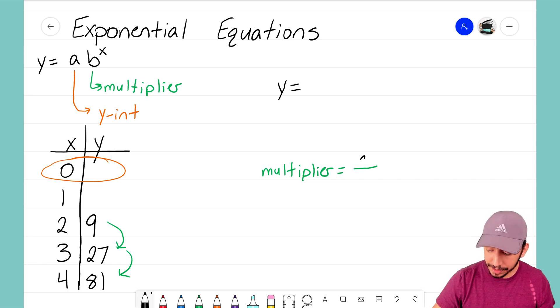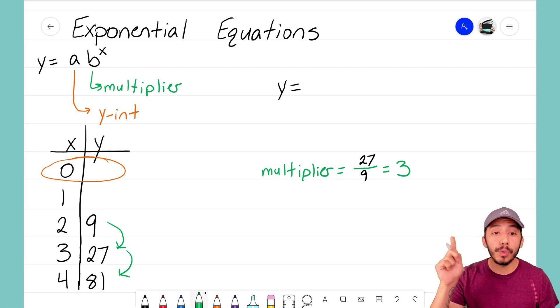So I would do 27 divided by 9. We punch that into our calculator and we see that 27 divided by 9 gives us a value of 3. So 3 is the multiplier. When I go from 9 to 27, I recognize that I'm just multiplying by 3. 9 times 3 gives me 27.